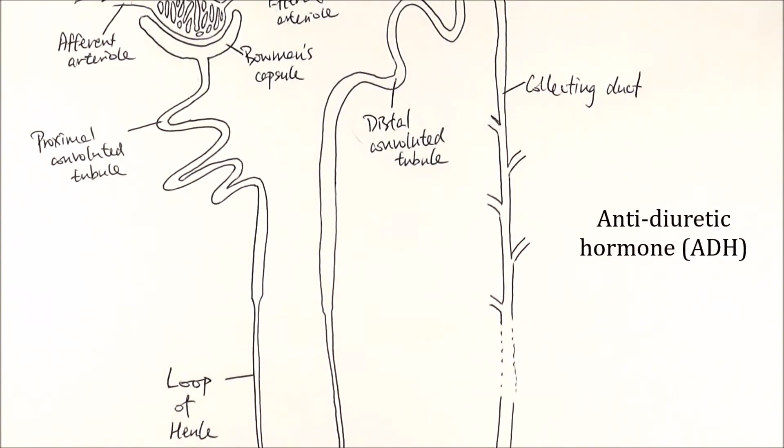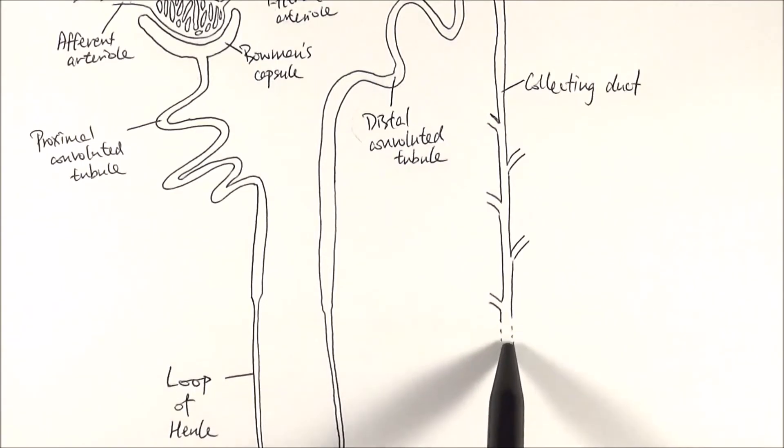And it particularly happens here because it is subject to the action of a hormone called ADH, anti-diuretic hormone, which then controls the permeability of the wall of the collecting duct. So if we have more ADH, that means the wall becomes more permeable and that means more water can be reabsorbed, rehydrating the body.